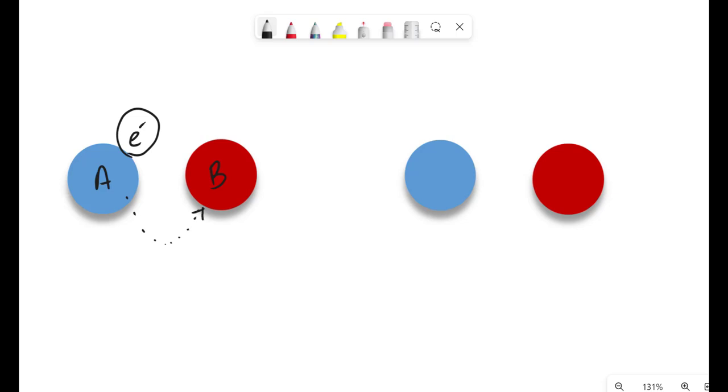In essence, if these two molecules interact with one another, here's what we will see. We will notice that A has lost the electron. You see, we don't see it here anymore. However, B now has gained the electron.